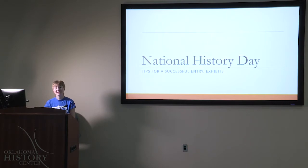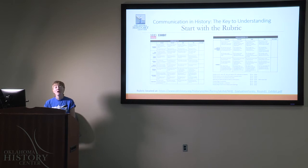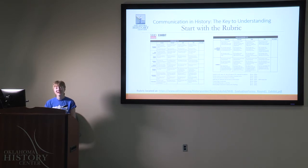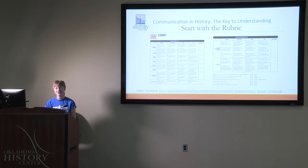We're going to start with tips for exhibits today. You're going to want to look at the rubric, which is located on the OK History website or the National History Day website. You'll see on the rubric that the majority of it for historical quality, 80%, remains the same through all five categories. What's really important to look at is the bottom part, clarity of presentation, 20%. That's where you'll see some of the main details that differ between each category.